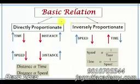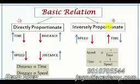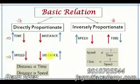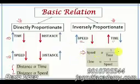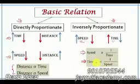This is the final relation. On the left-hand side, you can see it's directly proportionate; on the right-hand side, inversely proportionate. Time and distance are directly proportionate. Speed and distance are also directly proportionate. Coming to speed and time — speed and time are inversely proportionate. The speed is inversely proportionate to time, and time is inversely proportionate to speed. Please note down this relation.